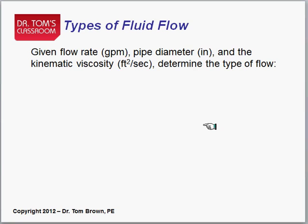Well, let's look at what they might do here to you. They'll give you the flow rate, typically in U.S. system, gallons per minute, or they could give you liters per minute in the SI system. They give you the pipe diameter in inches or centimeters, kinematic viscosity, feet squared per second. So what are you going to do?